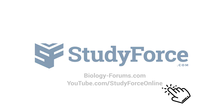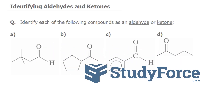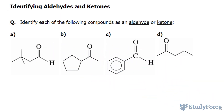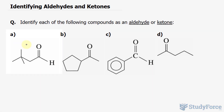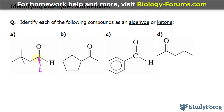In this quick tutorial, I'll show you how to identify aldehydes and ketones. So we have four separate molecules here. Focusing in on A, you'll notice that we have this carbon right here, double bonded to this oxygen. We'll use that as our focus.